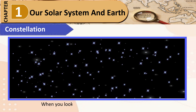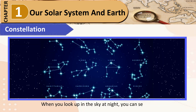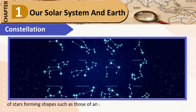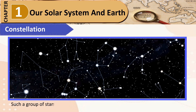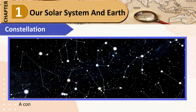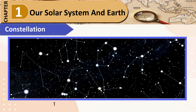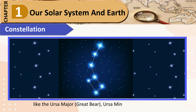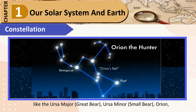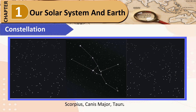Constellation: When you look up in the sky at night, you can see groups of stars forming shapes such as those of an animal, a mythological character, or an object. Such a group of stars with some imaginary shape is called a constellation, or Nakshatra. A constellation may have just 10 stars or sometimes more than a million stars. There are 88 constellations known so far. You can identify some with the naked eye, like Ursa Major (Great Bear), Ursa Minor (Small Bear), Orion, Scorpius, Canis Major, Taurus, etc.